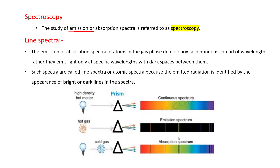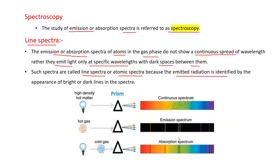Spectroscopy is the study of emission or absorption spectra. Line spectra: atoms in the gas phase emit light only at specific wavelengths with dark spaces between them — not a continuous spread. These are called line spectra or atomic spectra, identified by bright or dark lines. In contrast to the continuous rainbow spectrum, hot gas gives emission line spectra with bright lines, and cold gas gives absorption line spectra with dark lines.